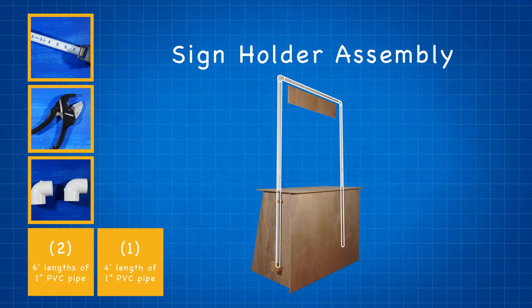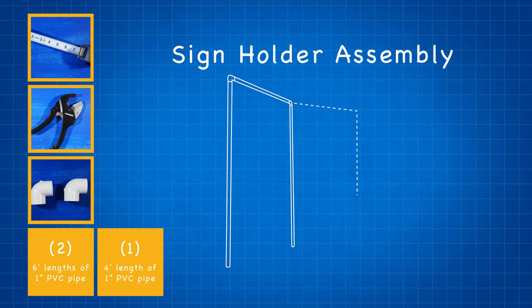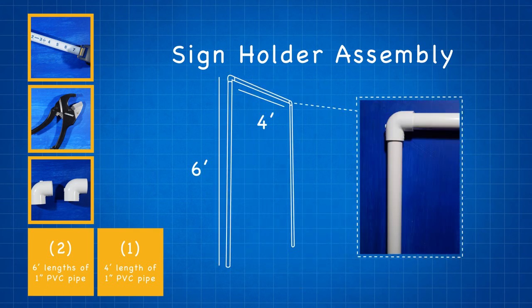Assembling the sign holder may be the easiest part of the project. Connect the six-foot lengths of PVC to the four-foot length using the two elbows. Now you will most likely need to cut a little more off of the four-foot length to fit. Make adjustments to the lengths of PVC to fit, or if you'd like your sign holder to be a little shorter.